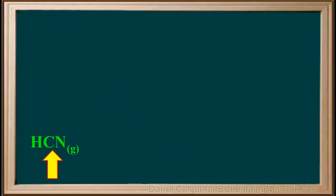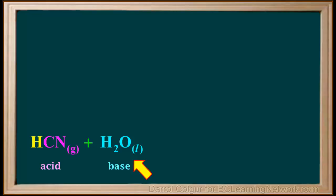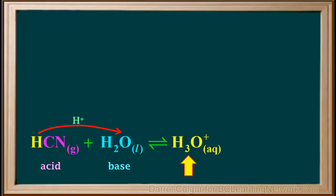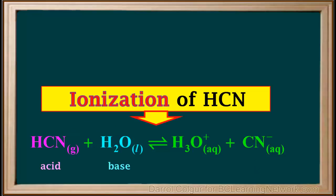For HCN added to water: HCN is the acid and H2O is the base. A proton is transferred from HCN to H2O, so H2O becomes H3O+ and HCN loses a proton to form CN-. The equation for the ionization of HCN is: HCN + H2O ⇌ H3O+ + CN-. A double arrow is used because the ionization of HCN does not go to completion — only a few molecules are ionized.